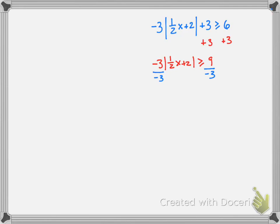So I've added 3 to both sides. Now we're at our divide by negative stage. So when we divide by this negative 3, 9 divided by negative 3 is negative 3. But more importantly, this absolute value switches.